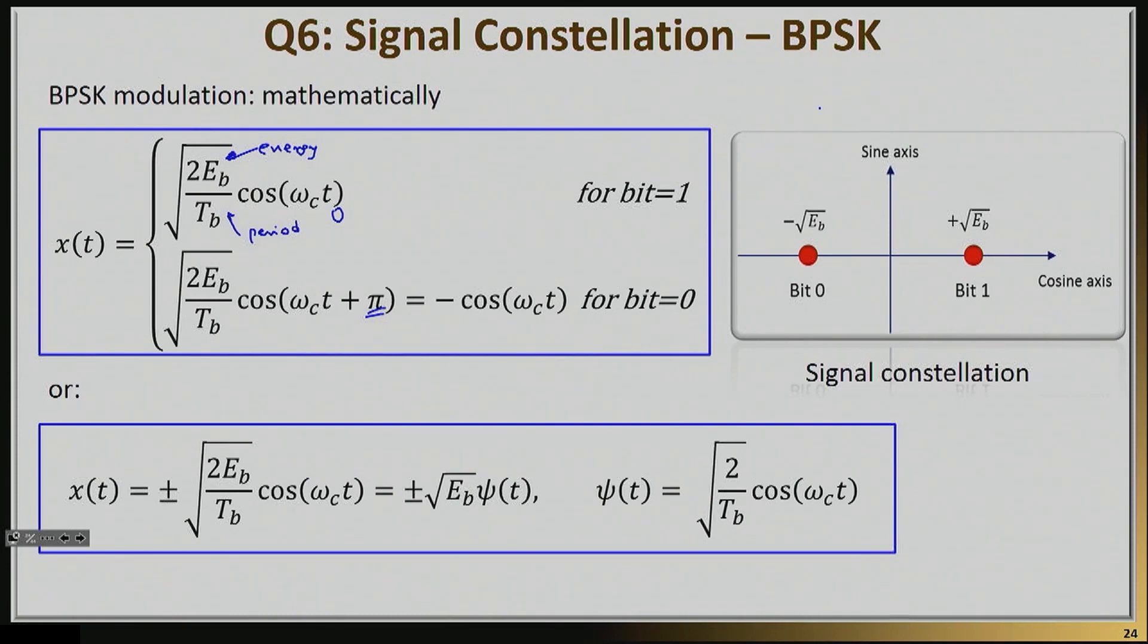So if you actually were to plot this on an axis, you could basically say that I'm basically transmitting a signal that has an amplitude either plus square root of Eb or minus square root of Eb. And that's basically it.